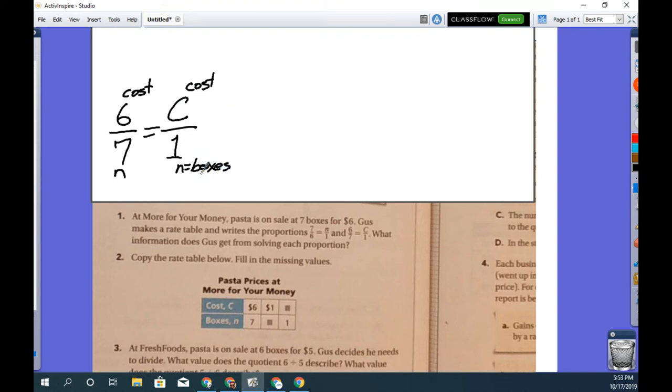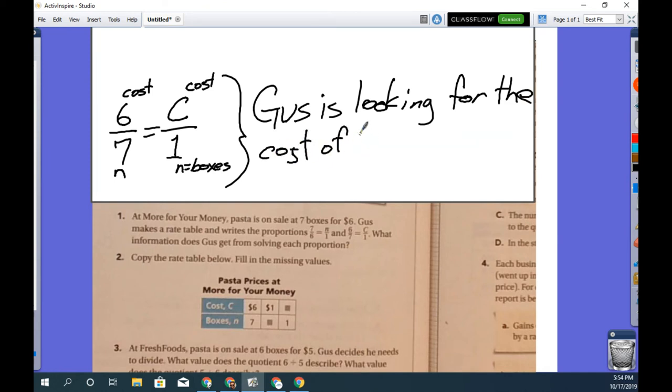Cost in dollars, and that must mean that this is n for number of boxes and this is n which equals boxes. So specifically, if we read the right side of the proportion again, he is looking for the cost per one box. So Gus is looking for the cost of one box. All right, so basically what we found out is that proportion one is finding the number of boxes per dollar. This proportion is finding the number of dollars for one box.